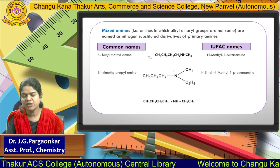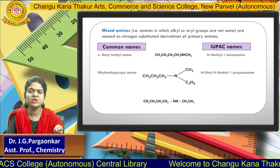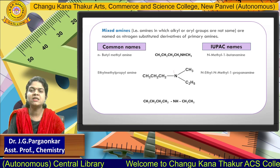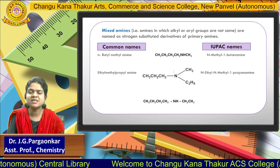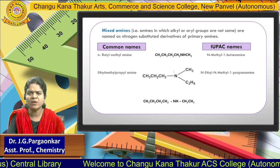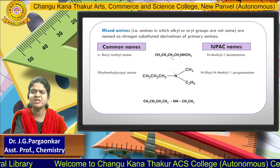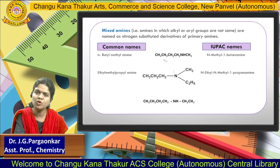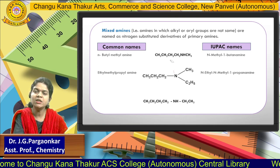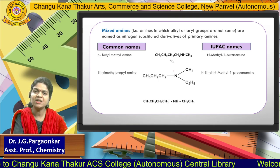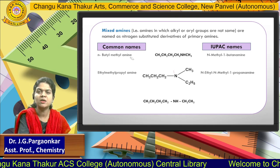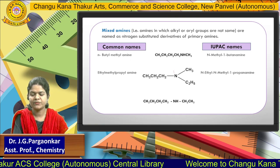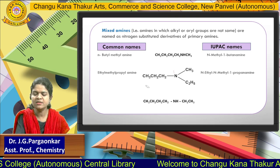Can you tell me what will be the name for this? The rule for common names is: select the alkyl substituents and write them in alphabetical order. Two alkyl substituents are there — methyl as well as butyl. Alphabetically, B comes first, so we write butyl methyl amine.